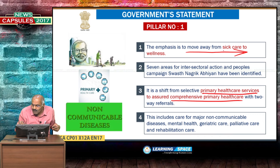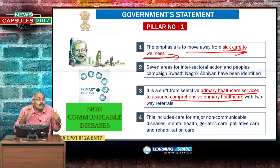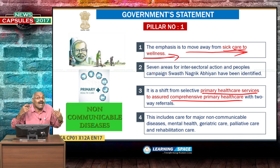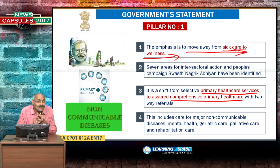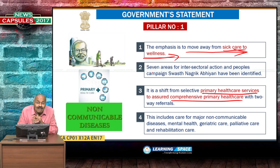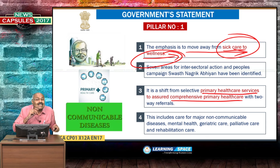Health will be moved from sick care to wellness — all steps will be taken to promote preventive health care. If proper steps are taken, diseases can be minimized. If suitable, potable water is available and sanitation facilities are improved, then disease prevalence will be reduced. That is the meaning of moving away from sick care to wellness.